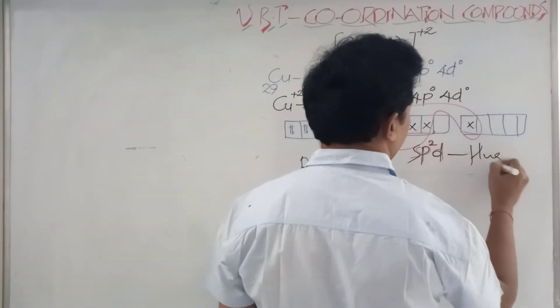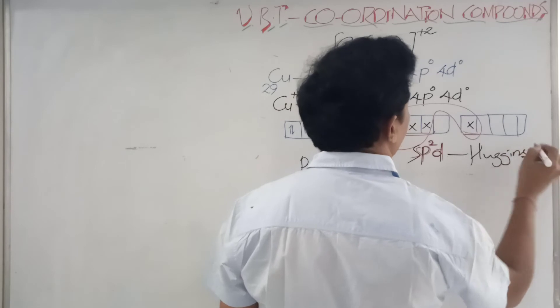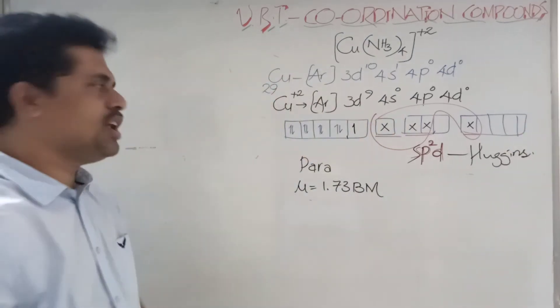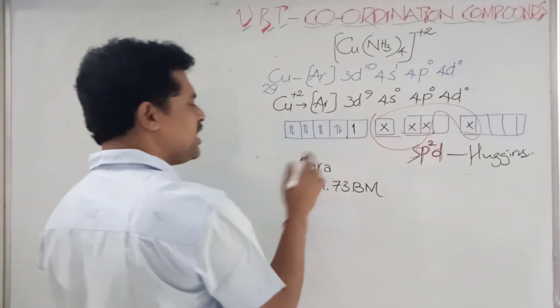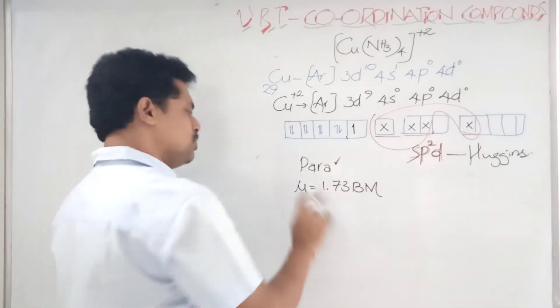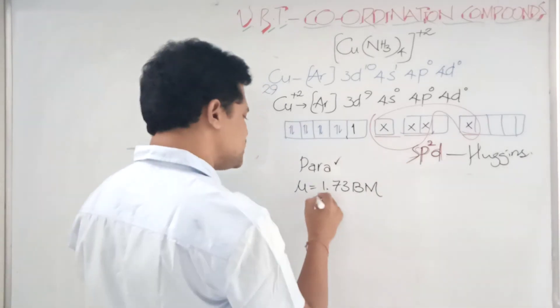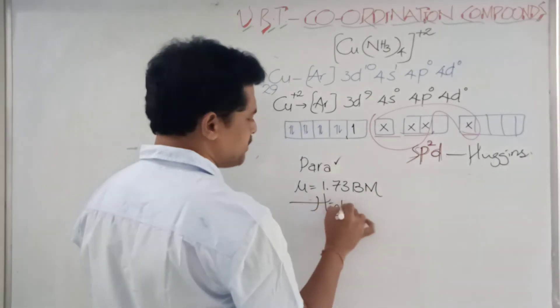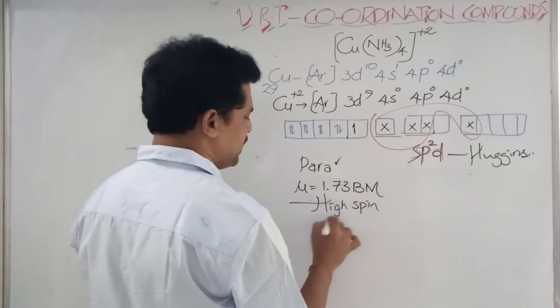And the hybridization is called sp²d hybridization - sp²d hybridization, not dsp², sp²d hybridization suggested by Mr. Hawkins. Okay, now everything is right. This 3d orbital we are not touching. One unpaired electron is there, so paramagnetic, so μ is equal to 1.73. Only one unpaired electron we are expecting, so high-spin complex, spin-free complex.